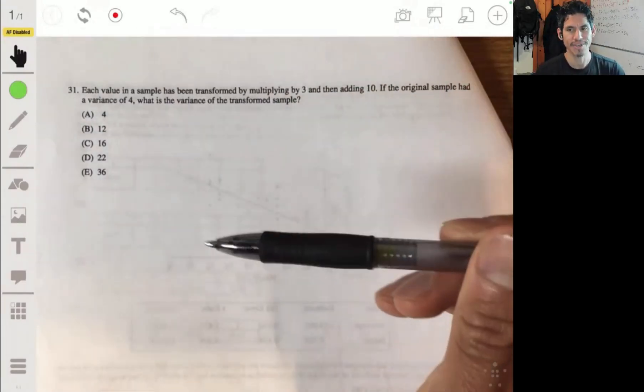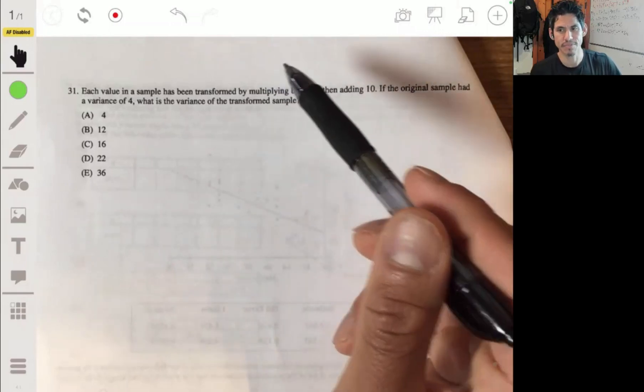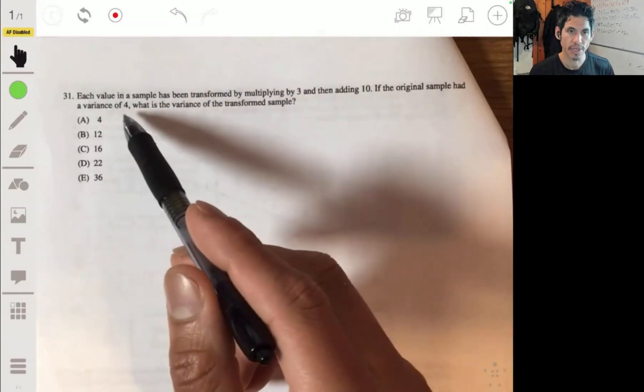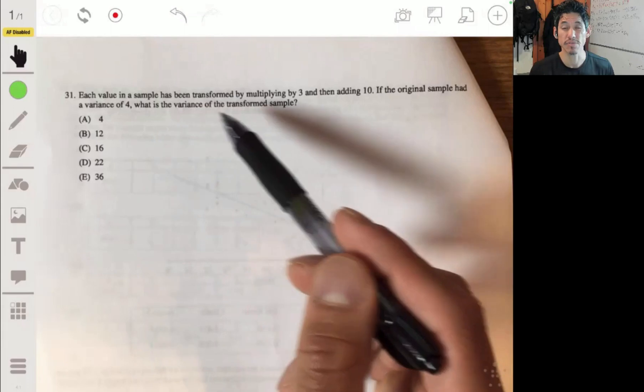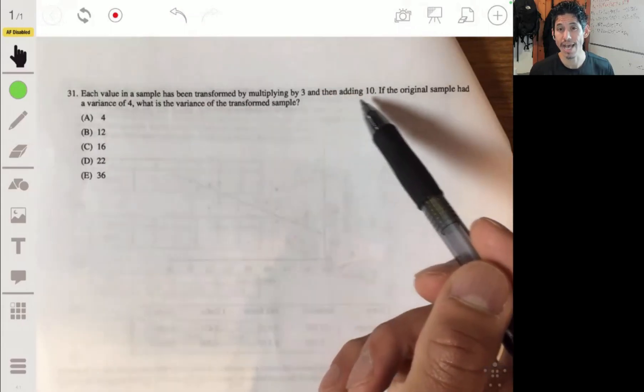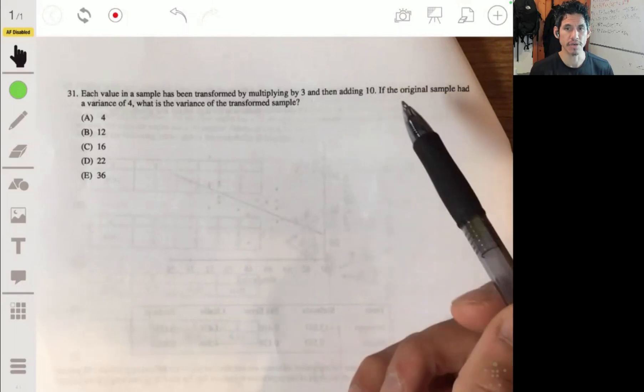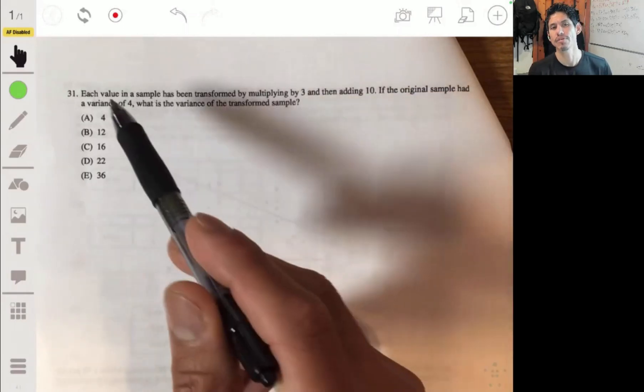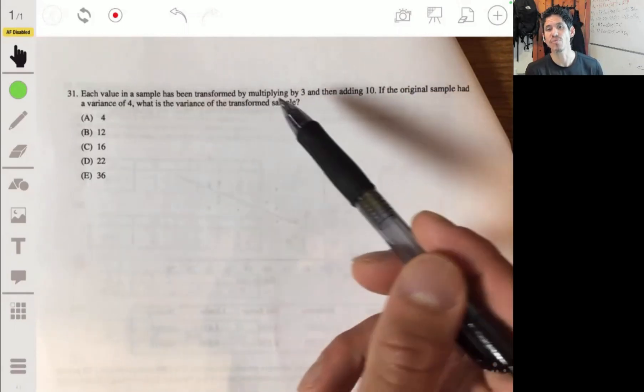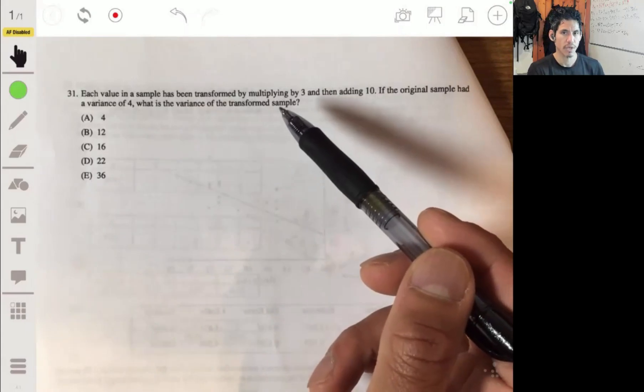Picking up on problem 21 or 31 from the 2017 practice exam. We got that each value in a sample has been transformed by multiplying by three and then adding 10. So we're doing some linear transformation action here. If the original sample had a variance of four, what is the variance of the transformed sample?